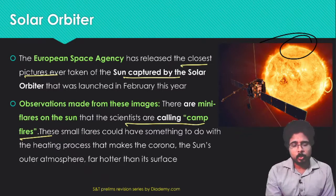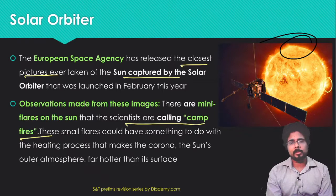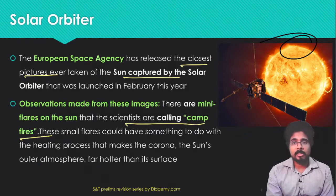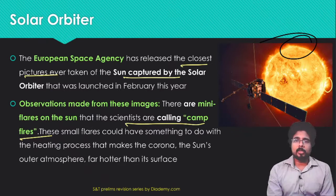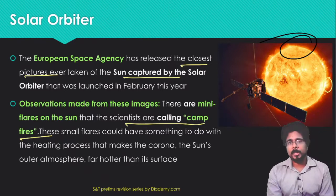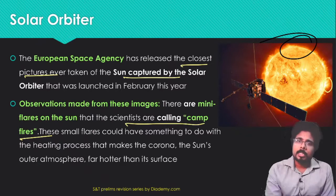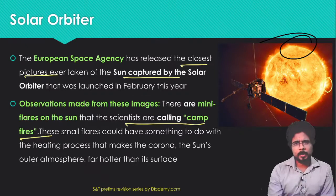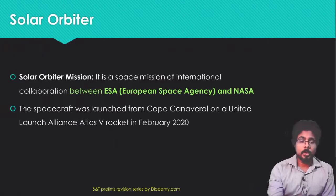Scientists are studying whether these flares have something to do with the heating process that makes the corona — the Sun's outer atmosphere — far hotter than its surface. The corona is the hottest part, and because of these campfire flares, scientists predict they will study more about them in the coming time. Many missions to the Sun have already been sent, with more planned.